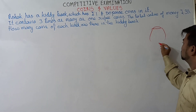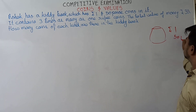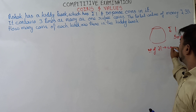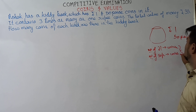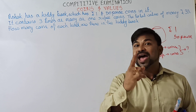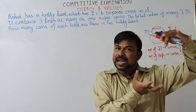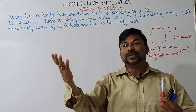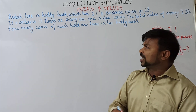He is talking about a kiddie bank. Let us imagine a kiddie bank. In that one, what coins has he placed? He has placed 1 rupee coins and also 50 paise coins. The question is: number of 1 rupee coins, how many are there? And number of 50 paise coins, how many are there? The total number of coins in the kiddie bank we are supposed to calculate. The total value he has given is 35 rupees. The relation is the number of 50 paise coins related to 1 rupee coins.